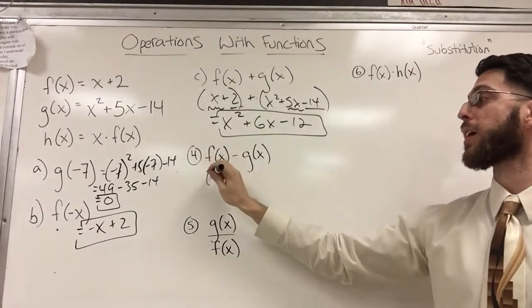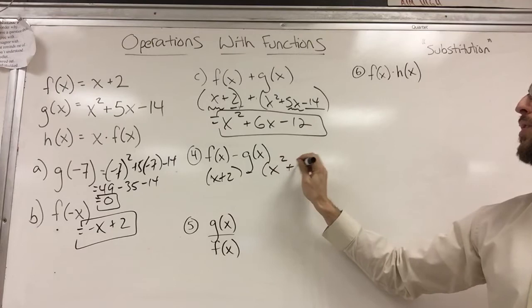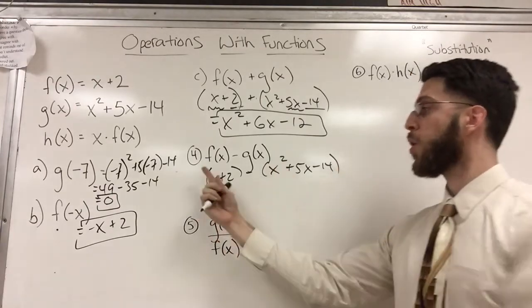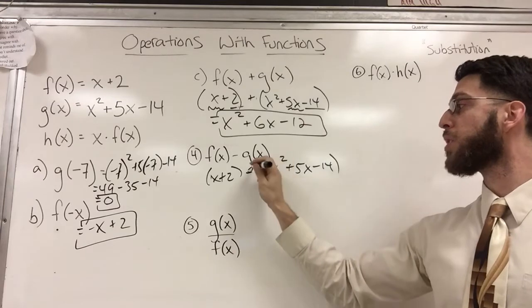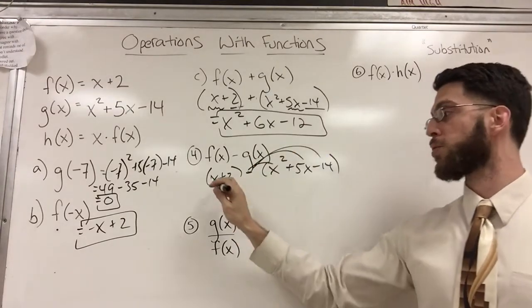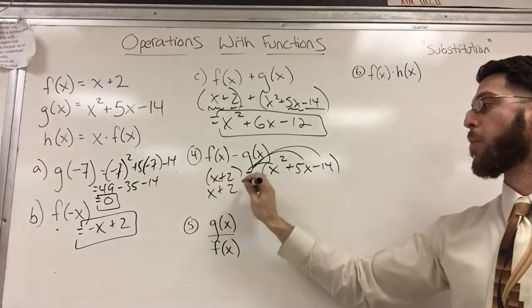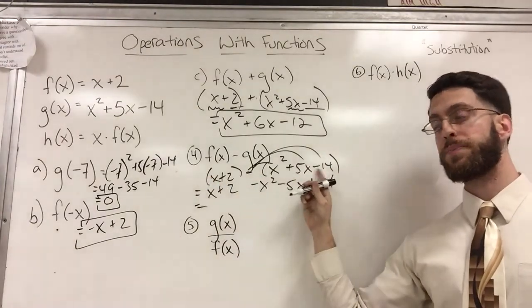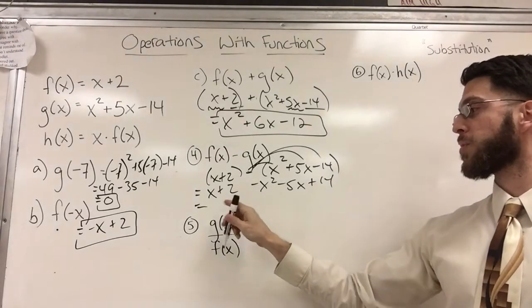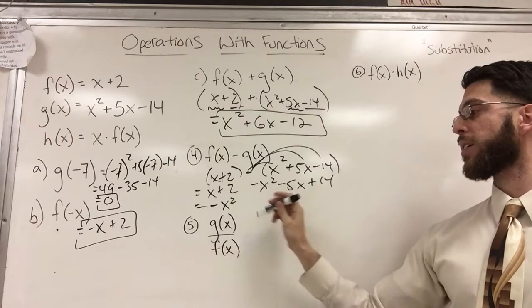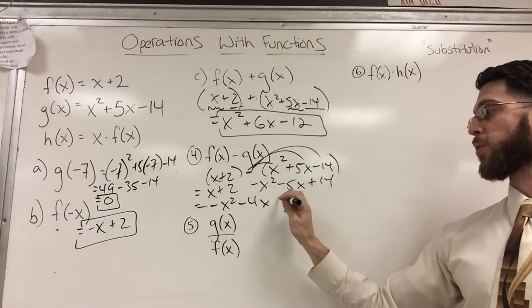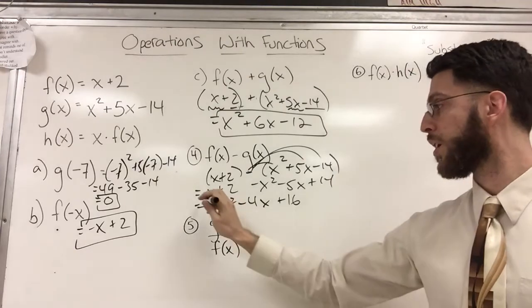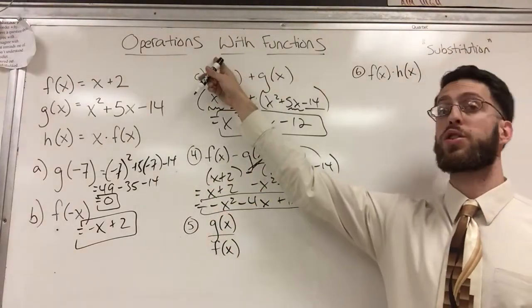Subtract, same setup here. I got x plus two minus x squared plus five x minus 14. Some of you learned a bunch of different ways. You can keep change, change, or you can distribute the negative sign. It's a bunch of different ways to subtract. So if I distribute the negative sign, it really is x plus two minus x squared minus five x and then plus 14. What happens is I change all three signs here in the subtrahend. So again, I combine like terms. This time I have negative x squared, x and negative five x is negative four x, positive two and positive 14 is positive 16. And hopefully you're pausing, rewinding, checking my work on the way. So there is the difference. That's the second operation with functions.